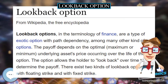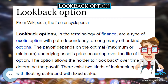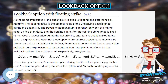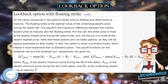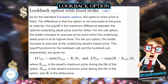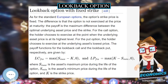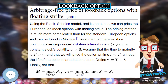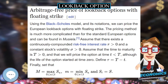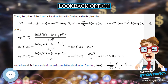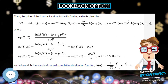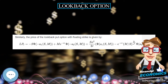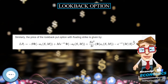Lookback options, in the terminology of finance, are a type of exotic option with path dependency, among many other kinds of options. The payoff depends on the optimal — maximum or minimum — underlying asset's price occurring over the life of the option. The option allows the holder to look back over time to determine the payoff. There exist two kinds of lookback options: with floating strike and with fixed strike.